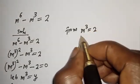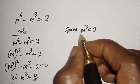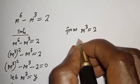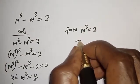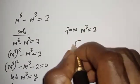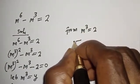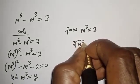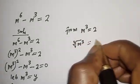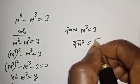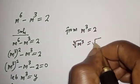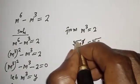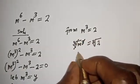From m raised to power 3 is equal to 2, let's take the cube root of both sides. Cube root of m raised to power 3 is equal to cube root of 2. The cube root and power 3 cancel, giving m is equal to 2 raised to power one-third.